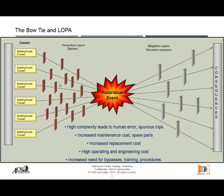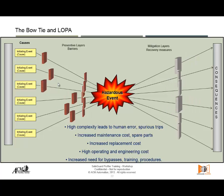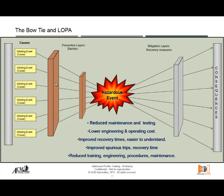Safeguard Profiler allows us to do that when we perform layer protection analysis. We can take all those safeguards that are not needed or can be simplified and maybe keep only two or three that provide the same amount of risk reduction but with less complexity and less maintenance. Instead of having 10 safeguards, we'll have two. Our operating and engineering cost goes down, and we reduce maintenance, testing, and engineering effort, while having easier-to-understand processes and systems.